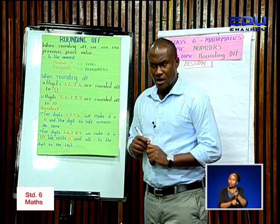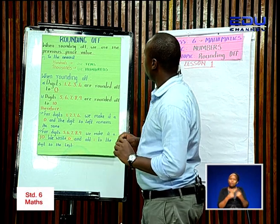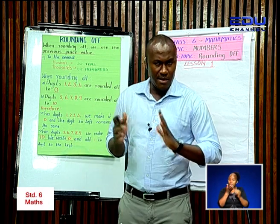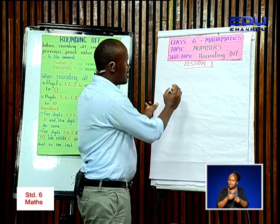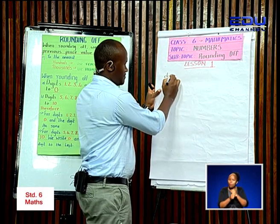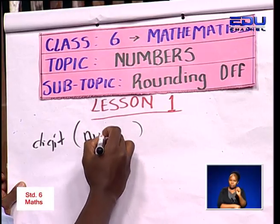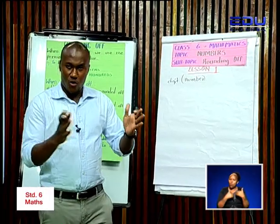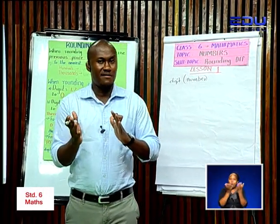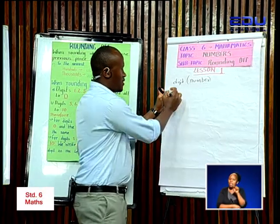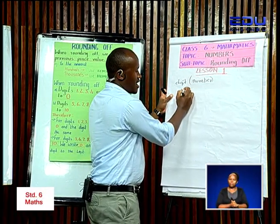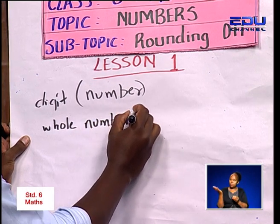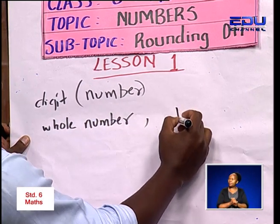Rounding off. When we talk about rounding off, we have a number. A number is made up of what we call digits. Digits make a number. We have a whole number and we have a decimal.